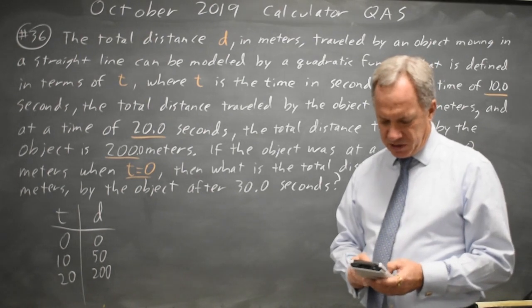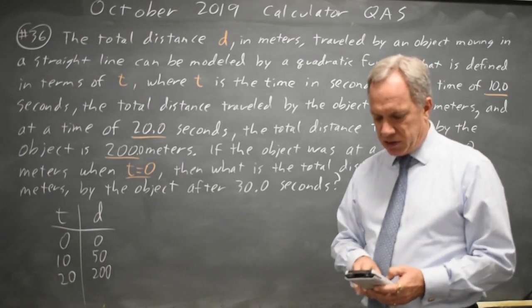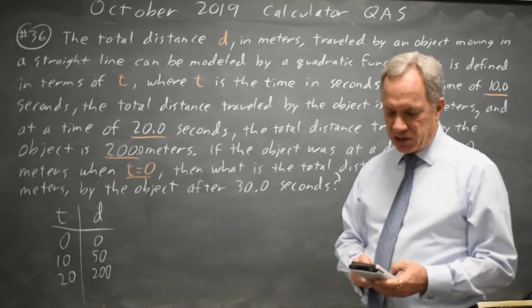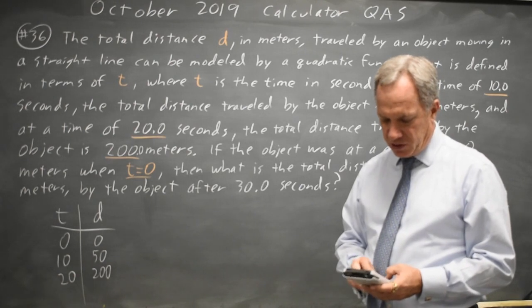And the X values are 0, 10, and 20, or T values. The Y values or D values, I'll put in list 2 as 0, 50, and 200.